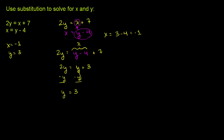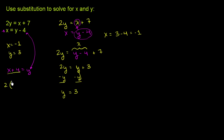So instead of saying x is equal to y minus 4 in that second equation, if we add 4 to both sides we get x plus 4 is equal to y. This is the exact same constraint — I just added 4 to both sides. And now since we've solved this equation explicitly for y, we can use the first equation and everywhere we see a y, we substitute it with x plus 4. So instead of 2 times y, we write 2 times x plus 4 is equal to x plus 7.